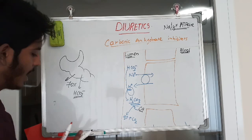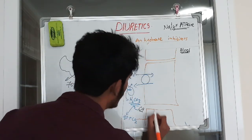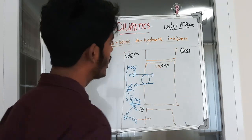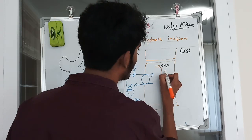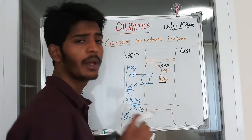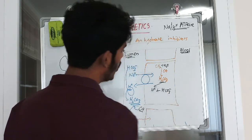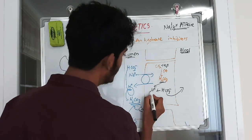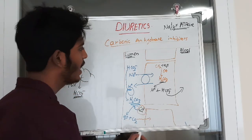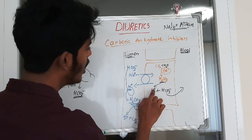Carbon dioxide is fat-soluble, so it easily diffuses into the cell. Inside the cell, carbon dioxide combines with intracellular water, and again by the action of carbonic anhydrase it forms H₂CO₃. This is highly unstable and immediately dissociates into a hydrogen ion and bicarbonate. The bicarbonate is reabsorbed back into the blood, and the hydrogen ion is used for the sodium–hydrogen exchange — driving sodium reabsorption.